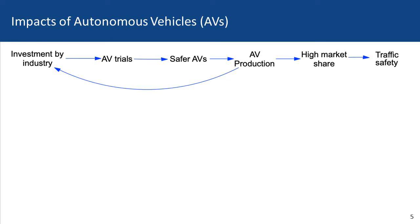Here we see what is known as a causal loop diagram, showing the impacts of autonomous vehicles on society. We begin on the left with investment by industry in the autonomous vehicle sector. The first step is AV trials, where we actually test the autonomous vehicles.